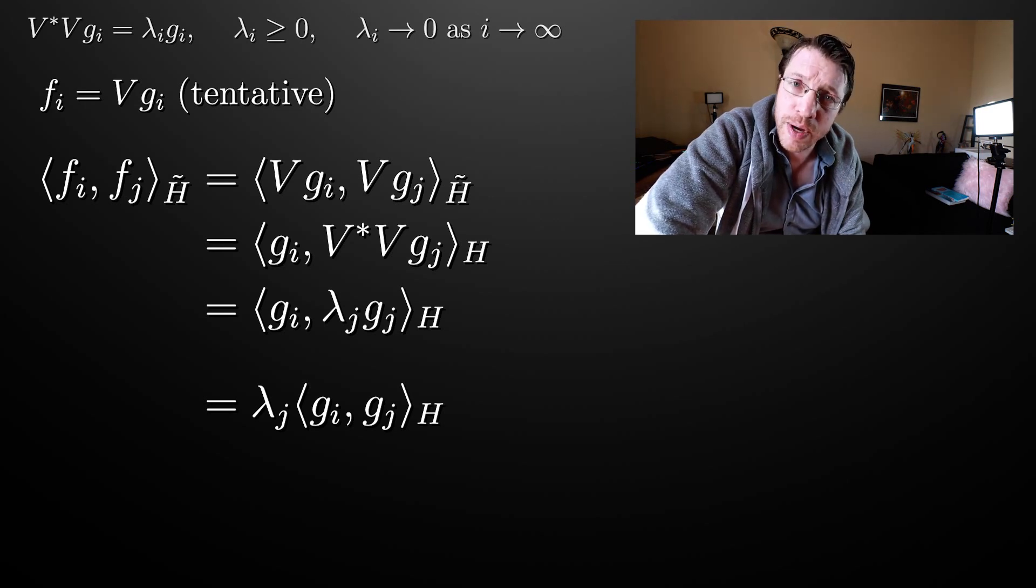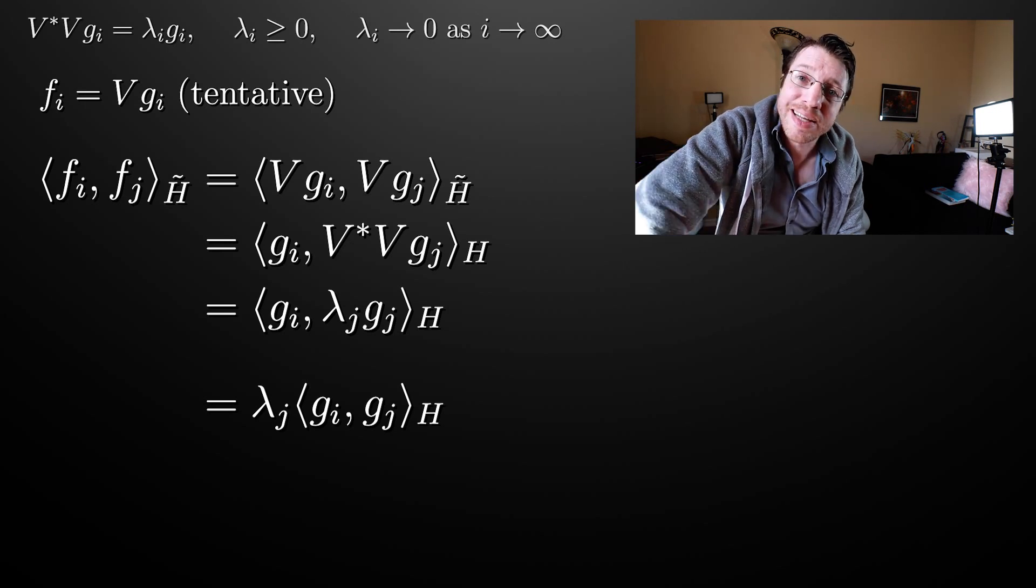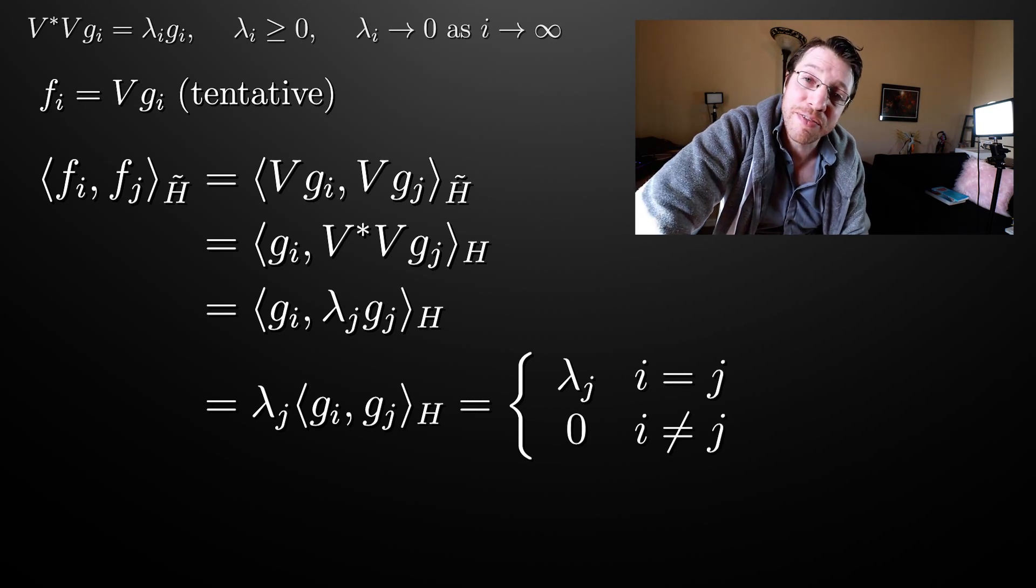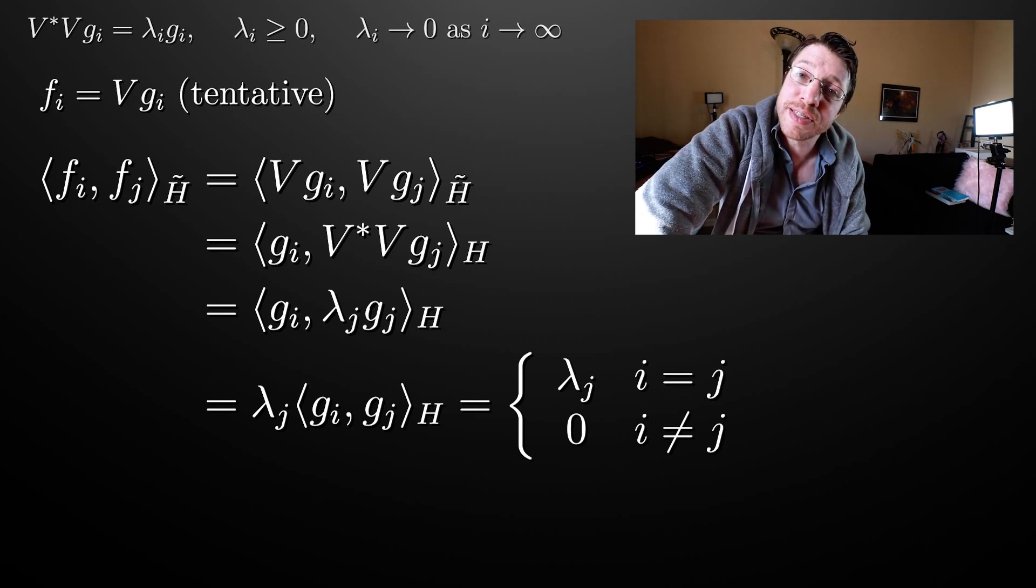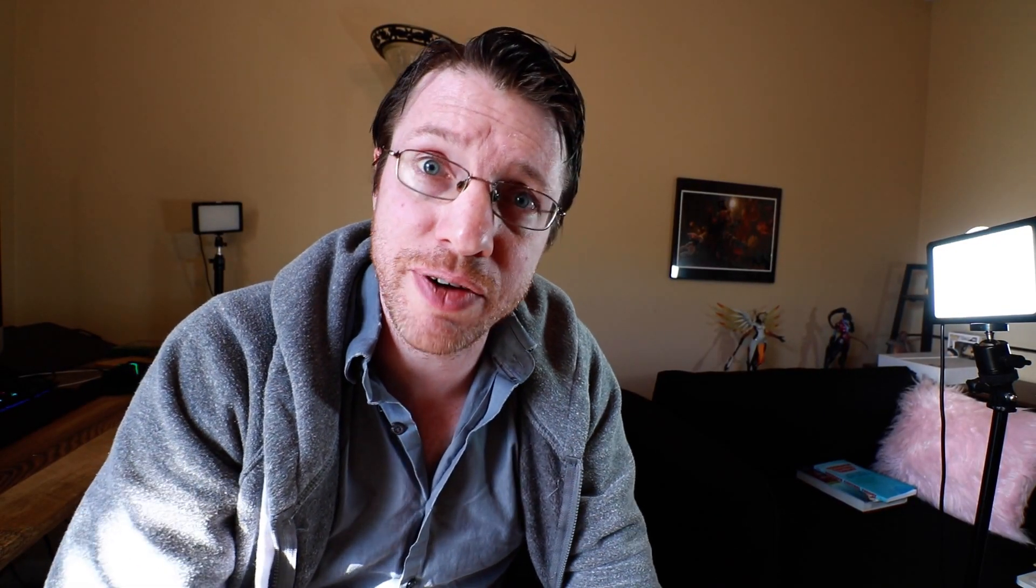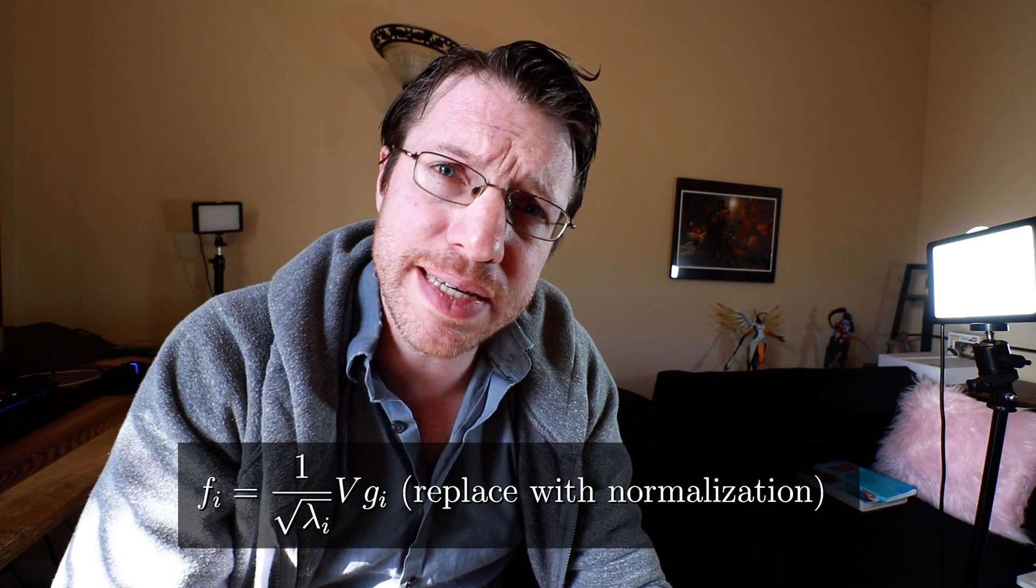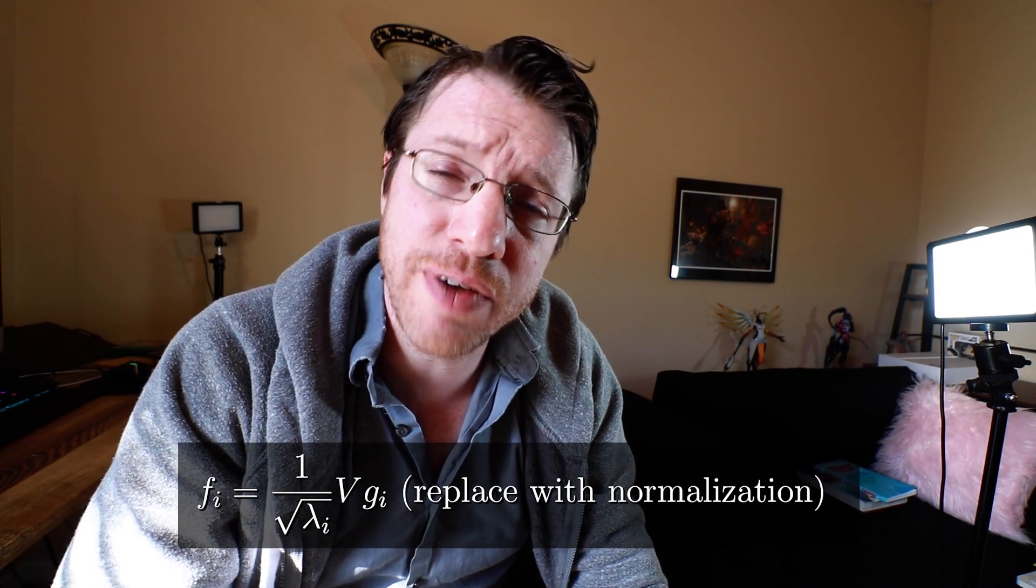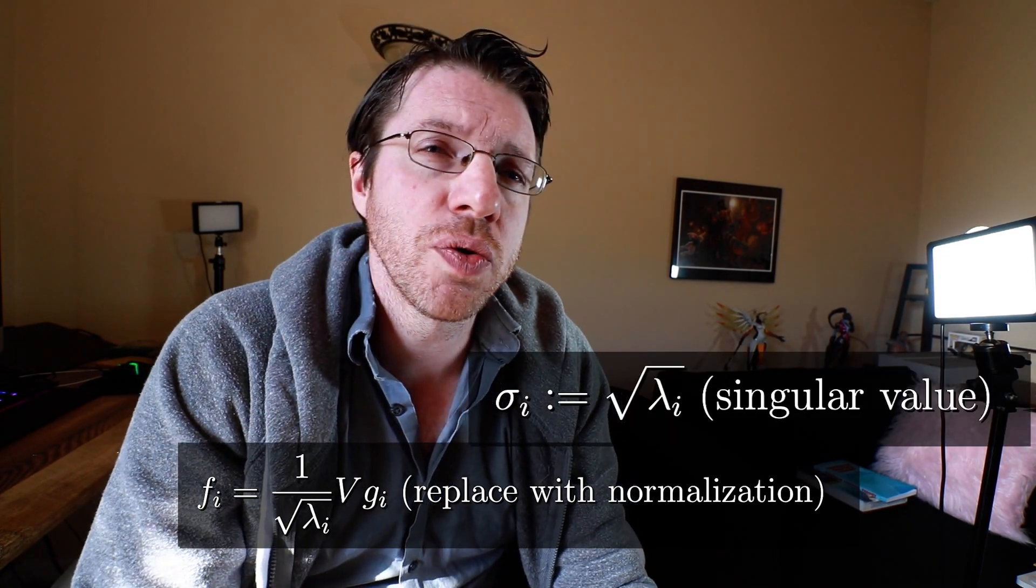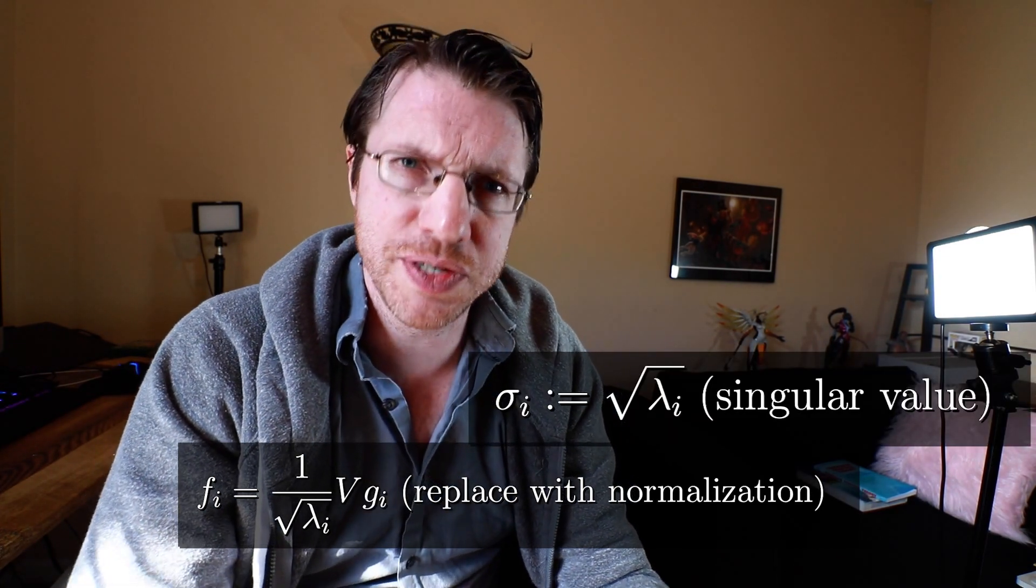That means that this is either going to be one if I is equal to J or it's going to be zero if I is not equal to J. And so then we see that if I is not equal to J, Fi and Fj, their inner product is zero. So they're orthogonal. And if I is equal to J, then we end up having that their norm is equal to Lambda J. So what we need to do now is we need to normalize these Fi's. So we're going to go ahead and replace them with V times Gi divided by the square root of Lambda I. And so this doesn't necessarily give you an orthonormal basis in the range. What it gives you is an orthonormal set.